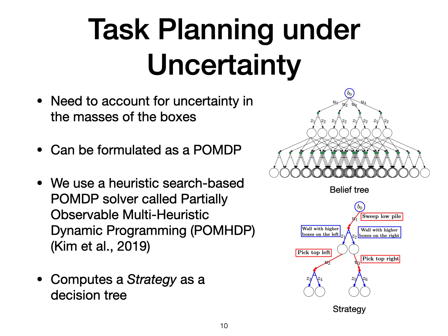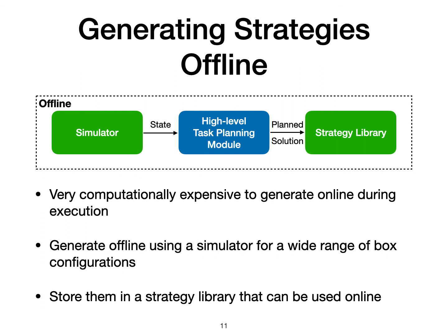The computed strategy is a decision tree of fixed depth prescribing semantic actions for possible outcomes. However, computing these strategies is a very computationally expensive process and we cannot afford to do that online without deteriorating throughput. Hence, we use the simulator offline to generate strategies for a wide range of box configurations, and all the computed solutions are stored in a strategy library that is used during online operation.